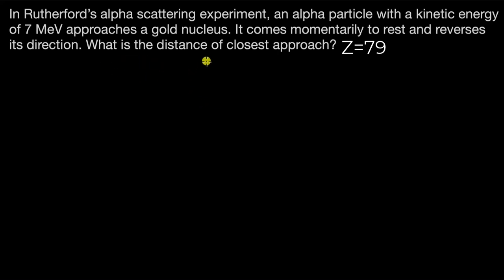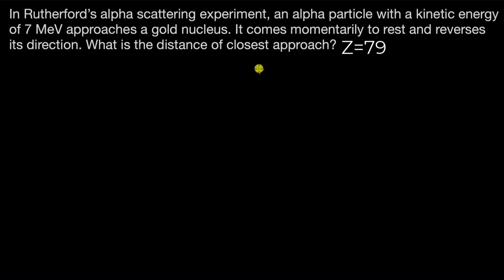In Rutherford's alpha scattering experiment, an alpha particle with a kinetic energy of 7 mega electron volts approaches a gold nucleus. It comes momentarily to rest and reverses its direction. The question is to figure out the distance of closest approach.